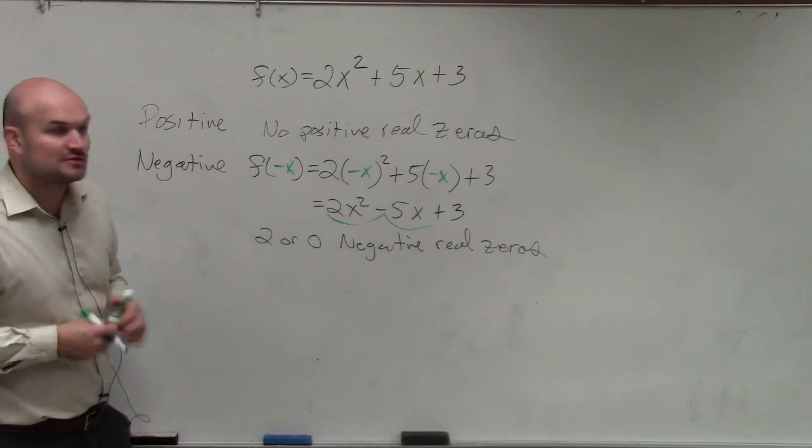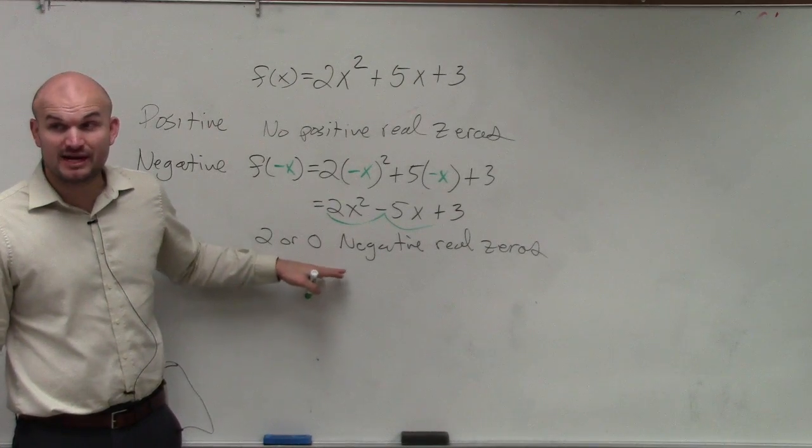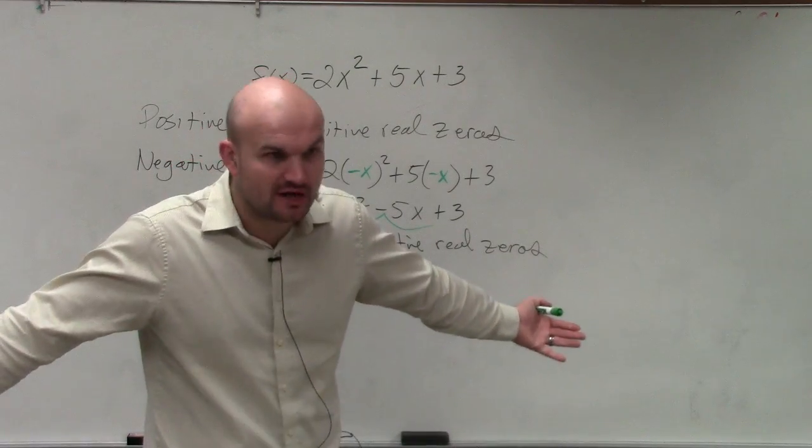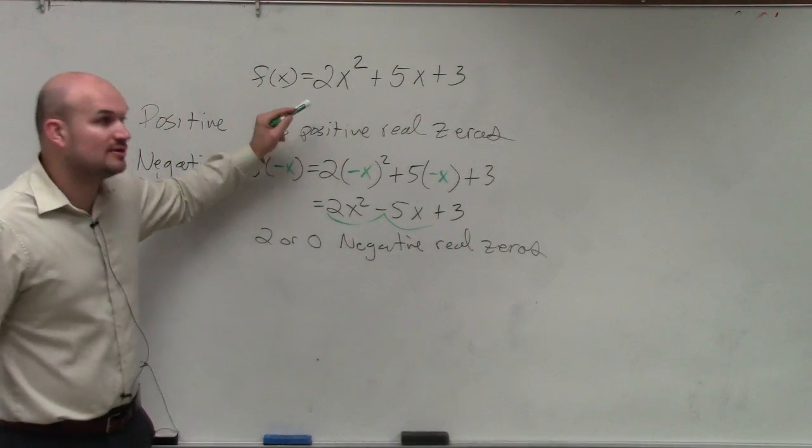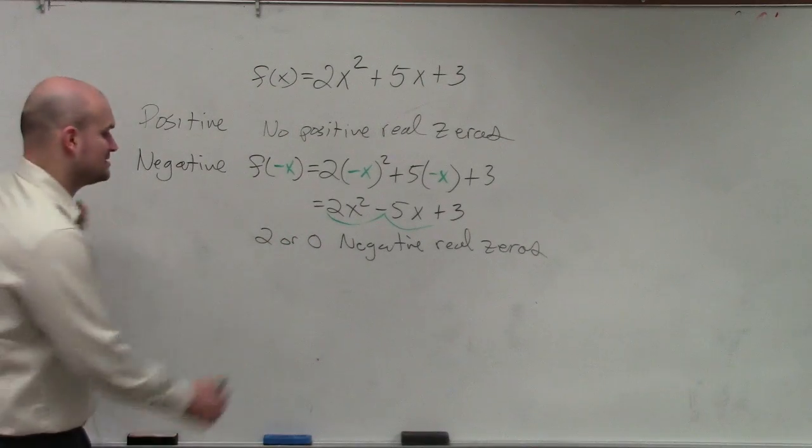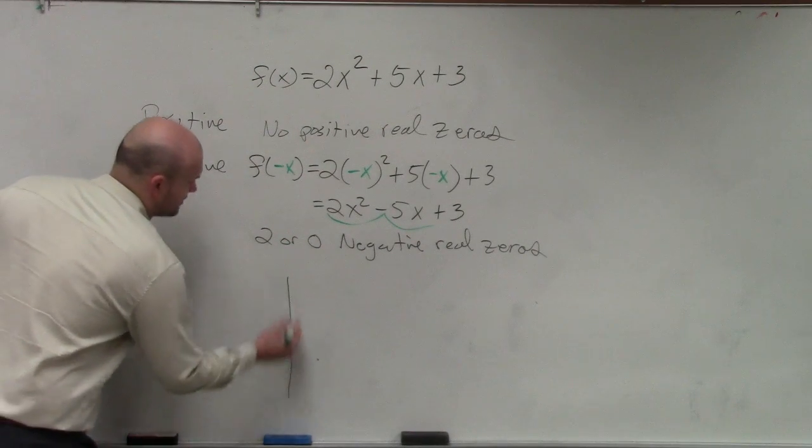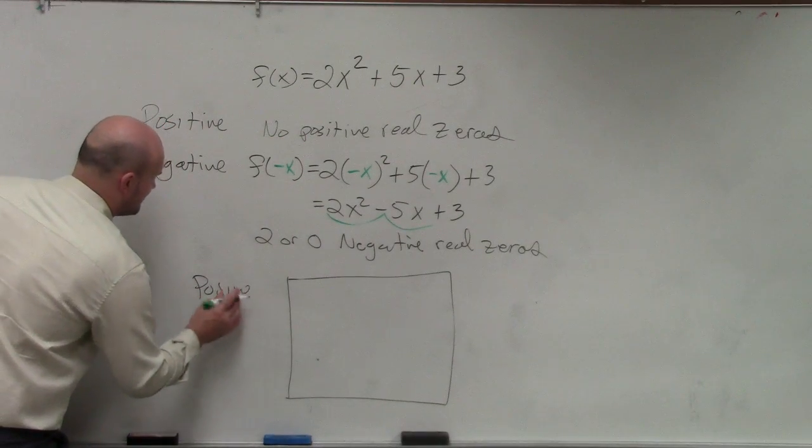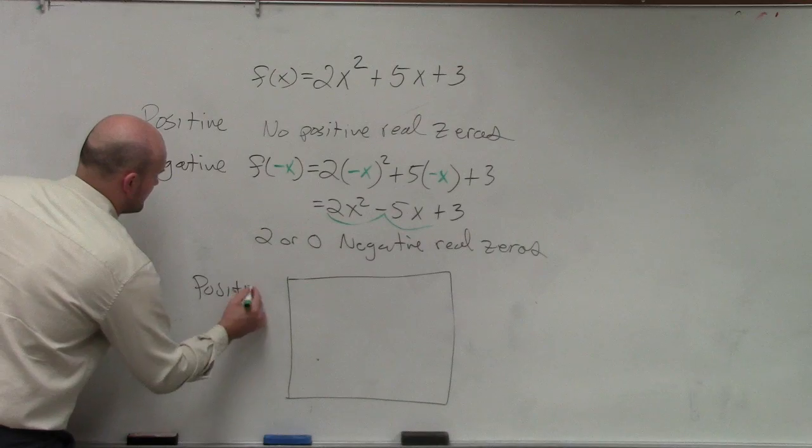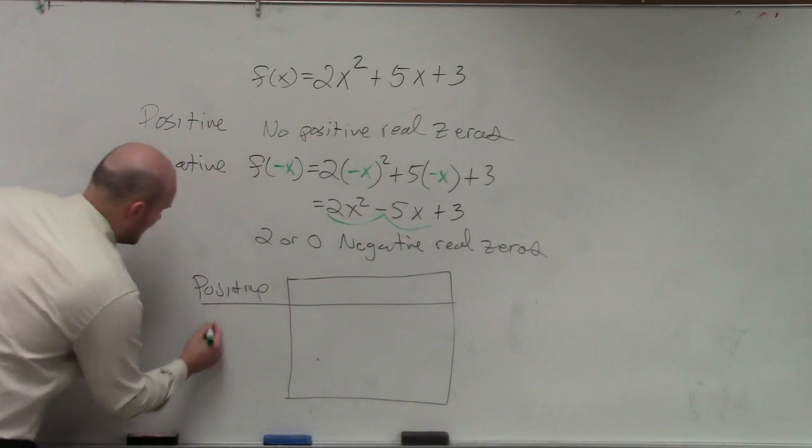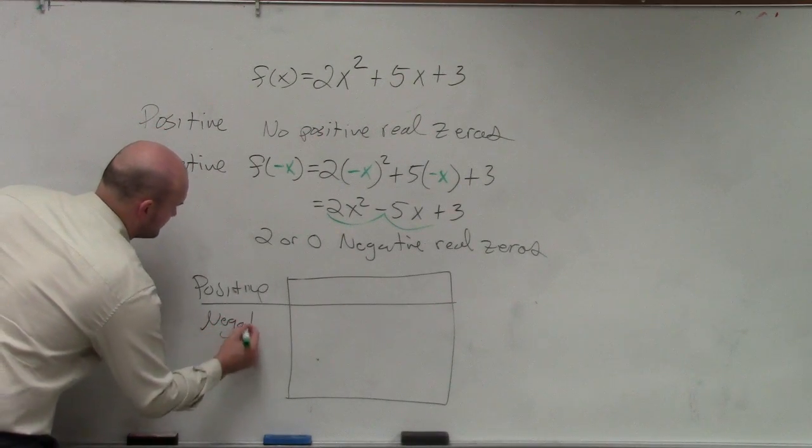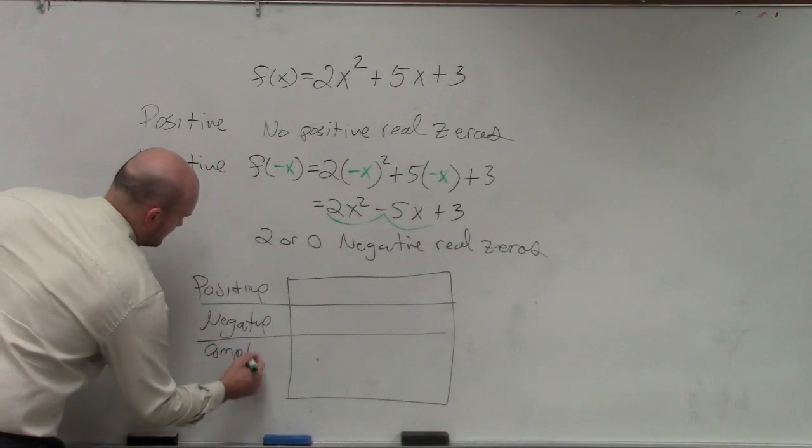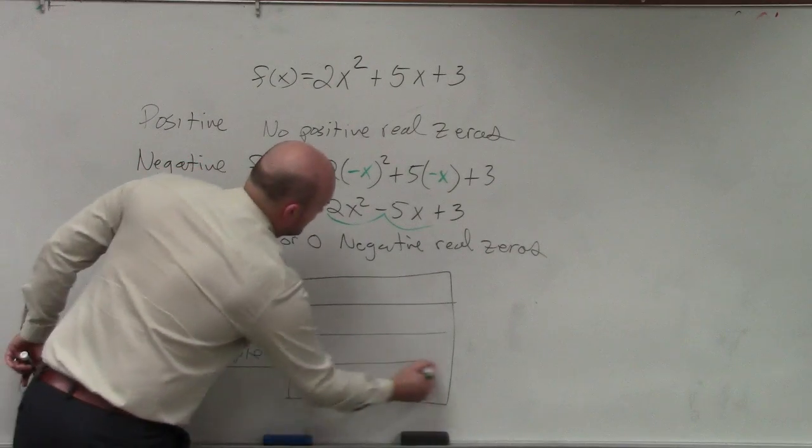So you have 2 or 0 negative solutions. Now, I have two options here for the negative, right? So what if I asked, what if the question, though, on the test was, hey, how many complex are there? Well, this tells you there are real positive, real negative. It doesn't really tell you the complex. So we have to create a chart, or at least I like to create a chart. And my chart consists of positive, negative, lesser, complex, and the total.